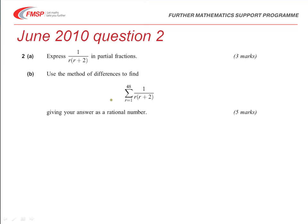You can see this question is in two parts. First part is asking you to express the fraction 1 over r(r+2) into separate fractions as partial fractions, in terms of something over r and something over r plus 2.